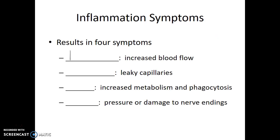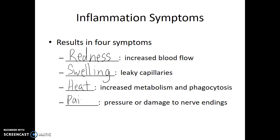These inflammation molecules trigger four symptoms of inflammation: redness, which results from increased blood flow to the area; swelling, which results from increased permeability of the capillaries; heat, which is increased metabolism and phagocytosis in the area — almost like a very localized fever; and lastly, pain, which results from pressure or damage to nerve endings and lets us know something is wrong. These four symptoms are all part of the second line of defense — the nonspecific innate immune system.